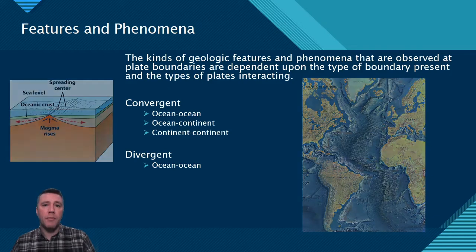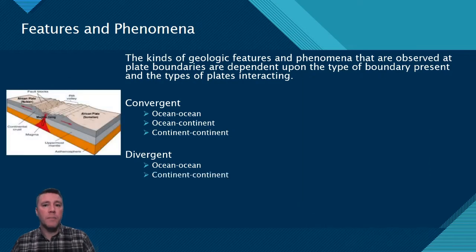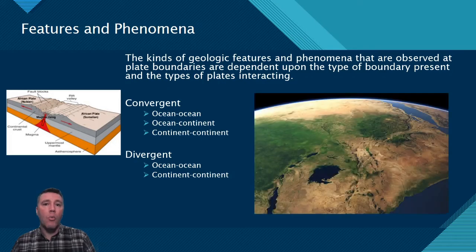The second type of divergent boundary is one that exists between two continental plates. As they begin to separate, they initially form what's called the Rift Valley. Over time, as the rift grows in size, water slowly begins to fill in, forming an increasingly larger sea. This satellite image shows some of the bodies of water found in Africa's Rift Valley as the Nubian plate on the left slides away from the Somalian plate on the right.